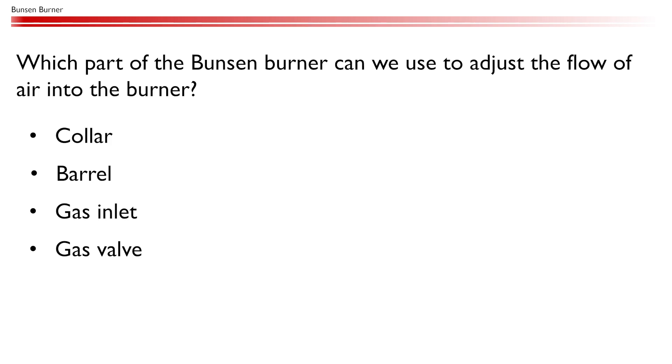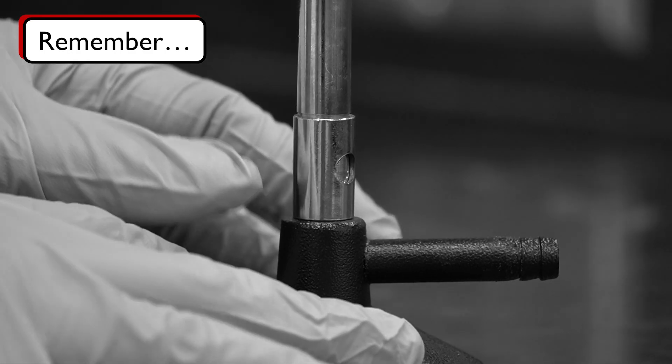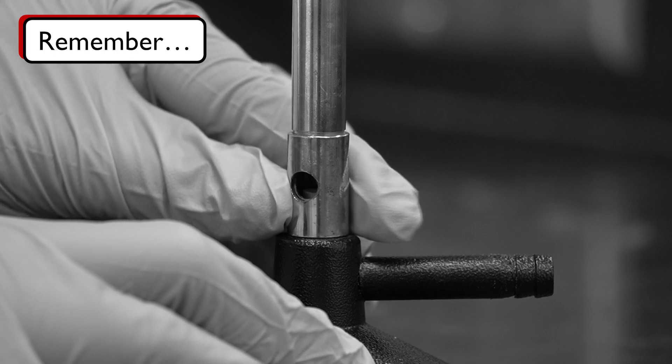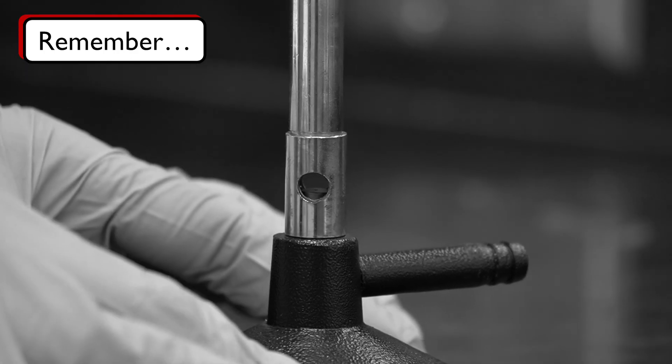Which part of the Bunsen burner can we use to adjust the flow of the air into the burner? As mentioned before, the collar, which is located at the bottom of the barrel, can be adjusted to control the air intake and the temperature of the flame.